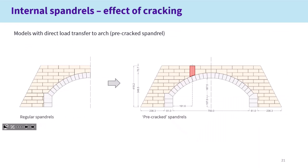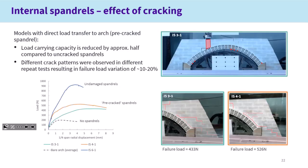We also included a number of models with a vertical block essentially directing the load onto the arch — removing the load distribution — and emulating the presence of cracks in the masonry blocks, which could be due to previous loading. What we found is that the capacity with this pre-cracked spandrel wall was actually reduced by half — referring to the orange and green lines. Something else we observed is that the cracking pattern and failure mode of the spandrel walls in the section far from the load had an effect on the load capacity and stiffness of the arch — differences between tests of 10 to 20%.